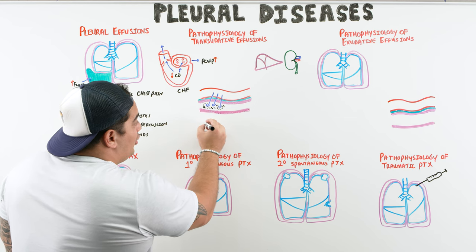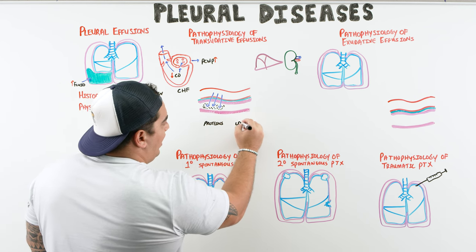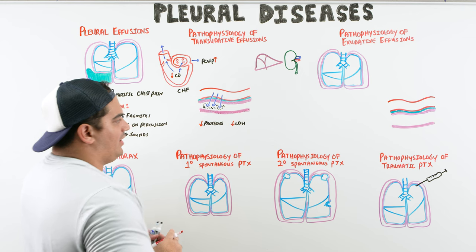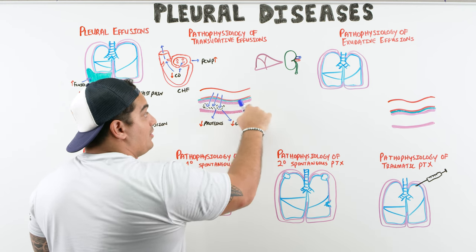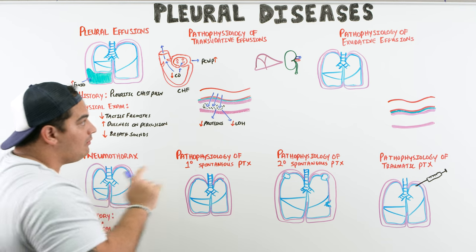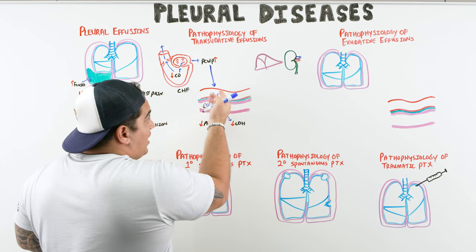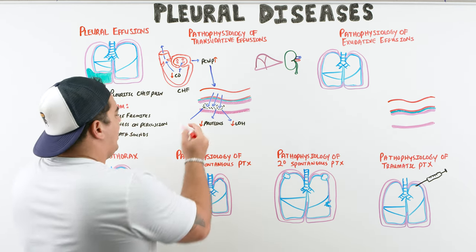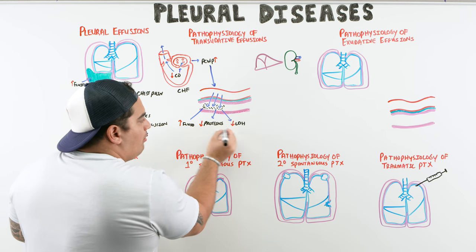In transudative effusions, there will be some proteins and LDH but very little of each. The fluid is rich in water and electrolytes but poor in protein and LDH. The increased hydrostatic pressure drives lots of fluid into the pleural space, but the low protein and LDH content indicates there is no true lung injury occurring.